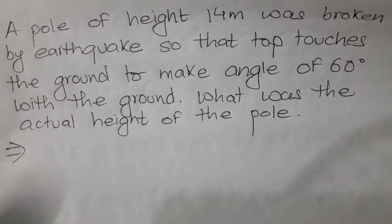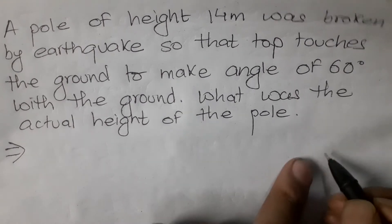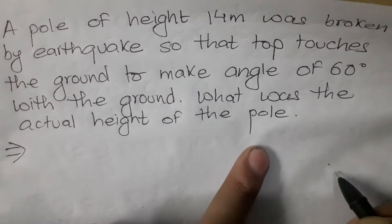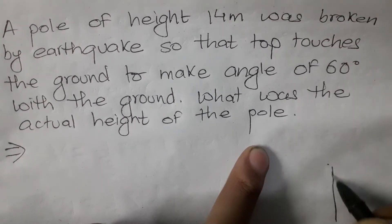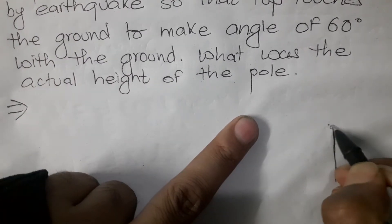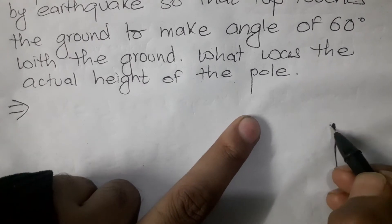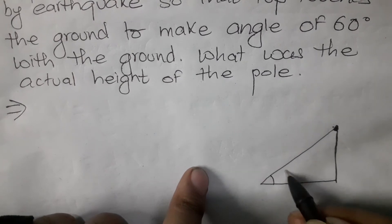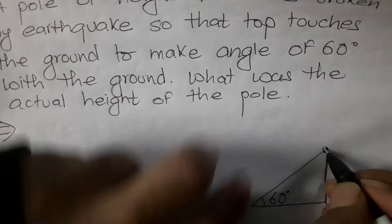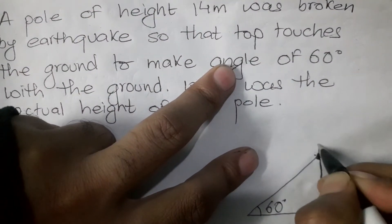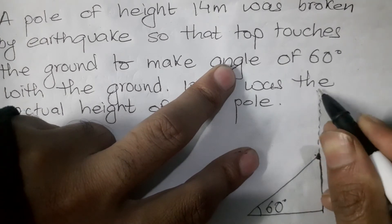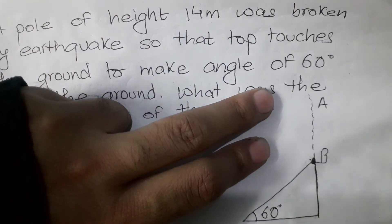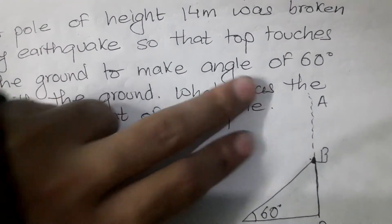This is the peak of the pole. We have drawn the figure of the pole with a vertical section. The points are labeled as A, B, C, and D — this is the figure.